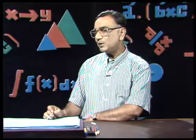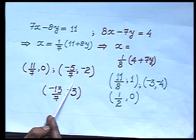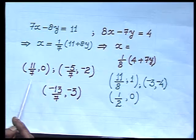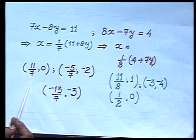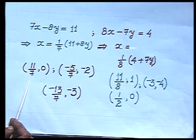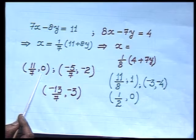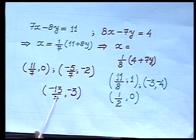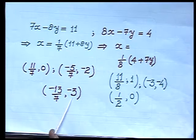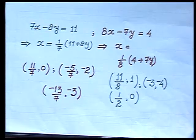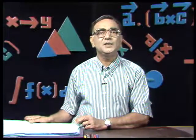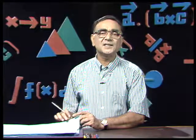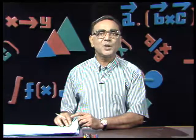Though it is possible to get the ordered pairs in integers, that is too time-consuming a process. And in case we get these ordered pairs in fractional form, it is practically very difficult to plot points like (11/7, 0) or (−5/7, −2) or (−13/7, −3). So there is a problem — either it is too time-consuming, or the fractional ordered pairs become difficult to locate on the graph paper.